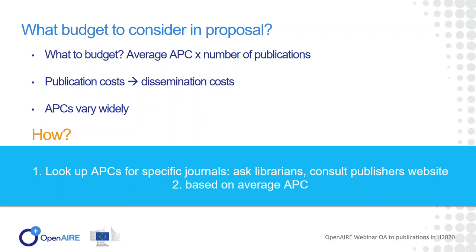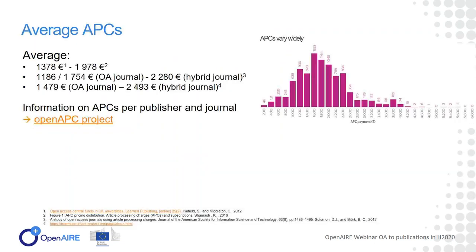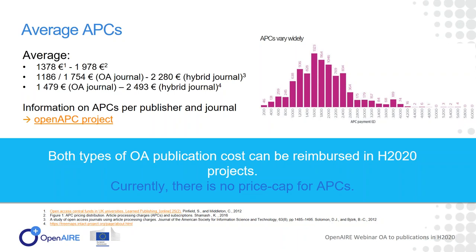You can also ask librarians at your institution, or base your budget on average APCs. Studies show that average APCs vary between 1,300 to 2,000 euros, but they have a long tail so costs can be higher. You can find information on APCs on publisher websites, but there's also a project called Open APCs where you can find APCs for certain publishers and journals. Hybrid journals sometimes charge higher APCs. Both types — hybrid journals and open access journals — can be reimbursed, and currently there's no price cap on APCs.